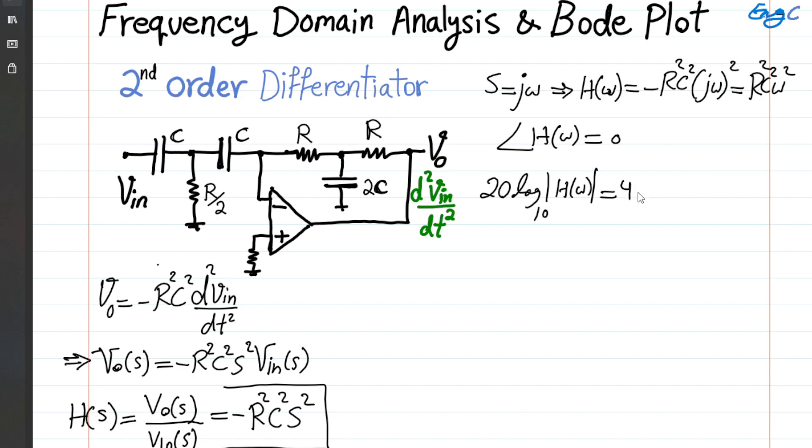We get 40 log base 10 of RC, and then we have 40 log base 10 of ω. This is what the magnitude frequency response formula is for this circuit.